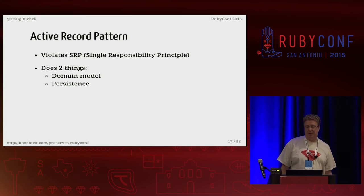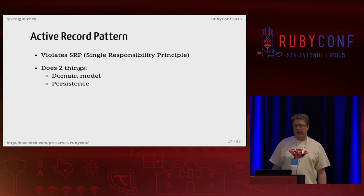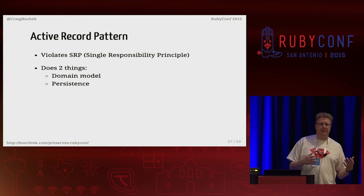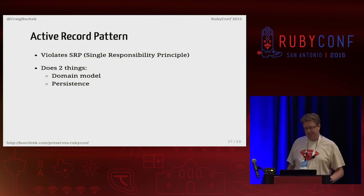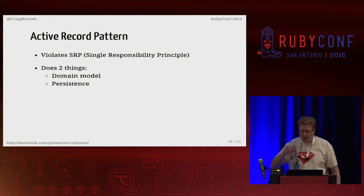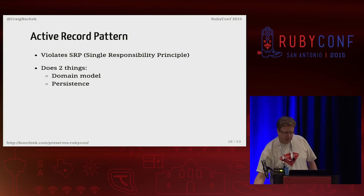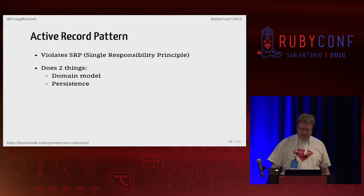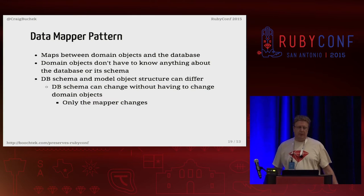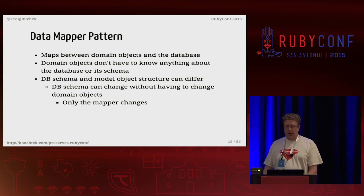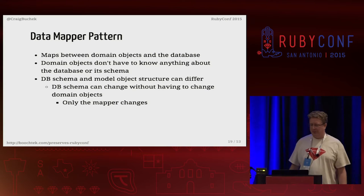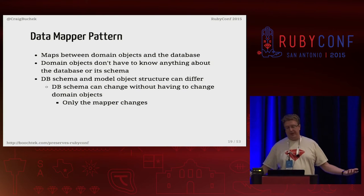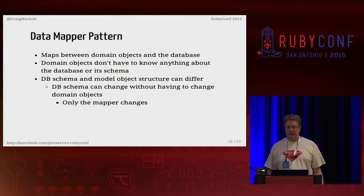My experience is the sweet spot for ActiveRecord is 20 or fewer model classes and a fully CRUD app where the database and the screens pretty much mirror each other. But most of our apps are more sophisticated than just CRUD. One of the alternatives is the data mapper pattern. There was a Ruby ORM called DataMapper that didn't quite implement the data mapper pattern — it was actually closer to the Active Record pattern. Martin Fowler explicitly says Active Record is a starting point and you should move to data mapper once things get too complex.